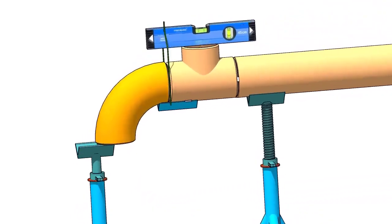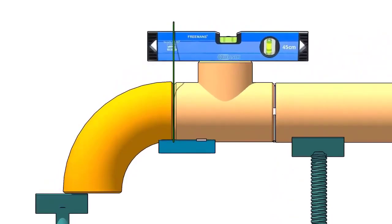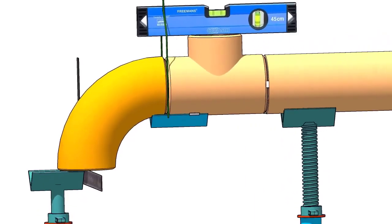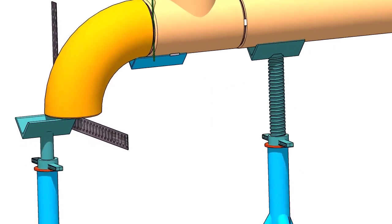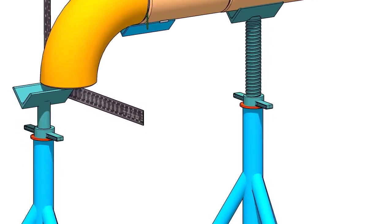Hold a large right angle or a straight edge below the elbow face, firmly. Put a level bottle on the right angle as shown. Rotate the elbow to make the face level.